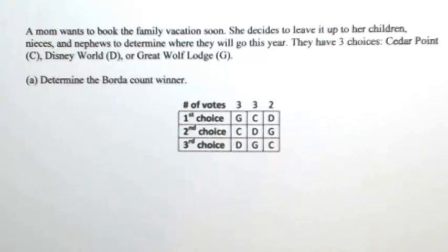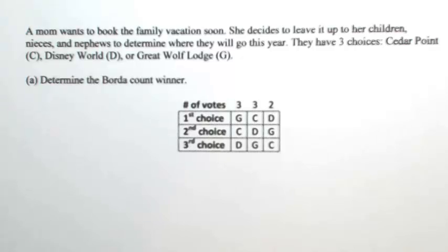A mom wants to book the family vacation soon. She decides to leave it up to her children, nieces, and nephews to determine where they will go this year. They have three choices: Cedar Point, Disney World, or Great Wolf Lodge.